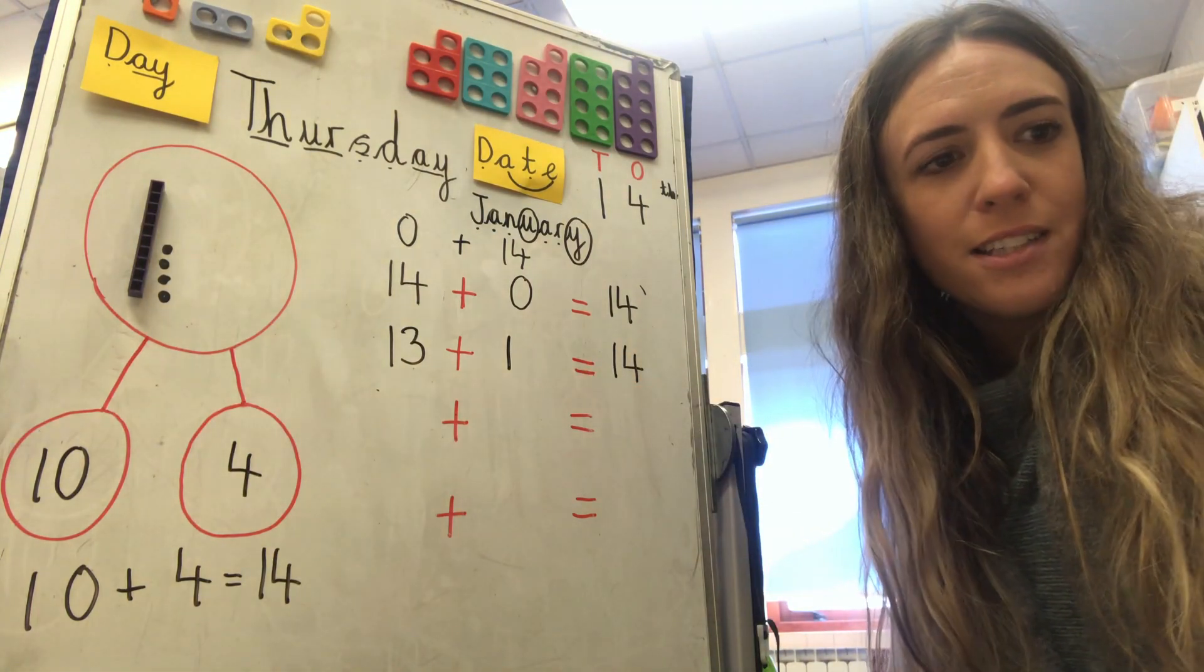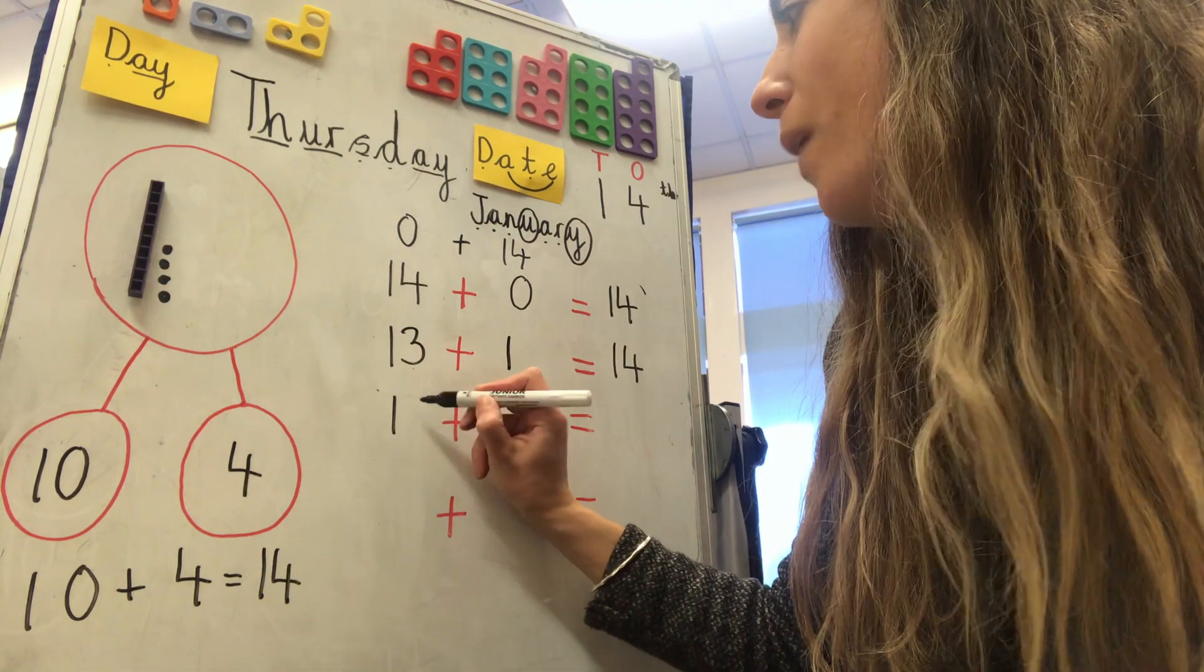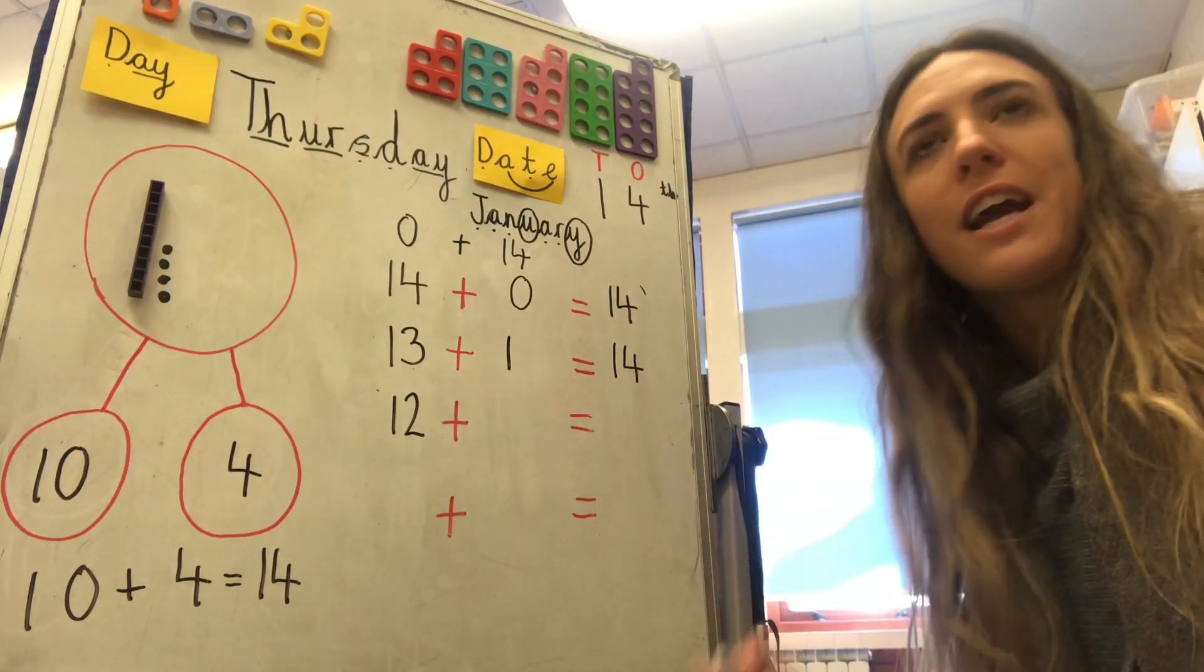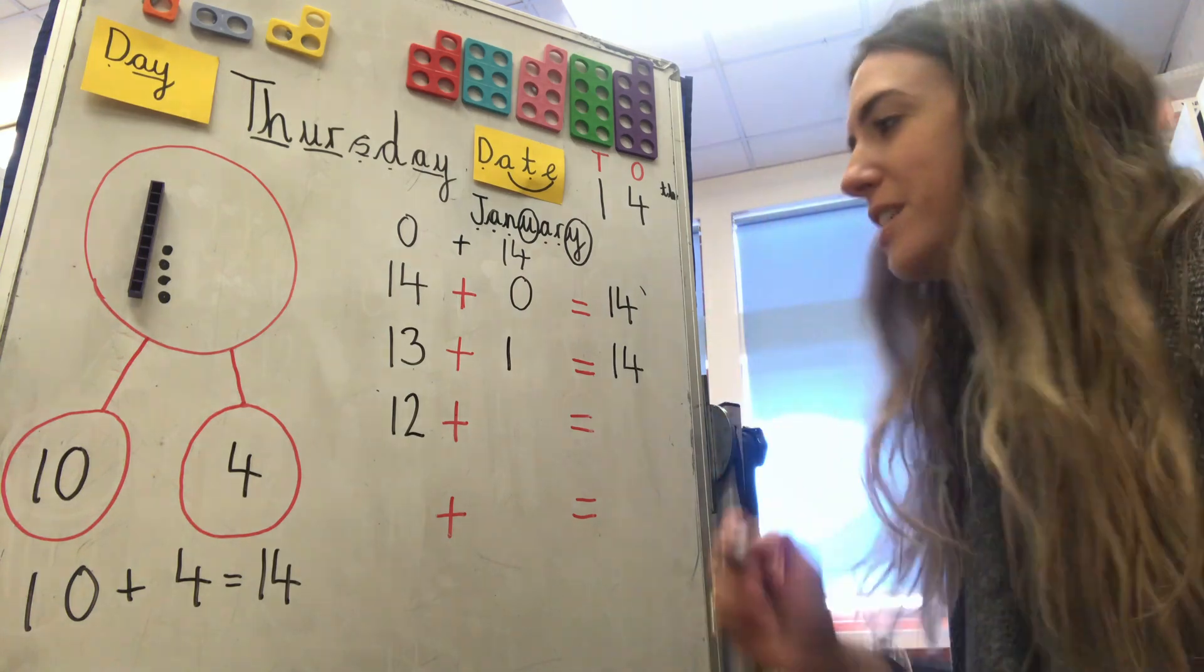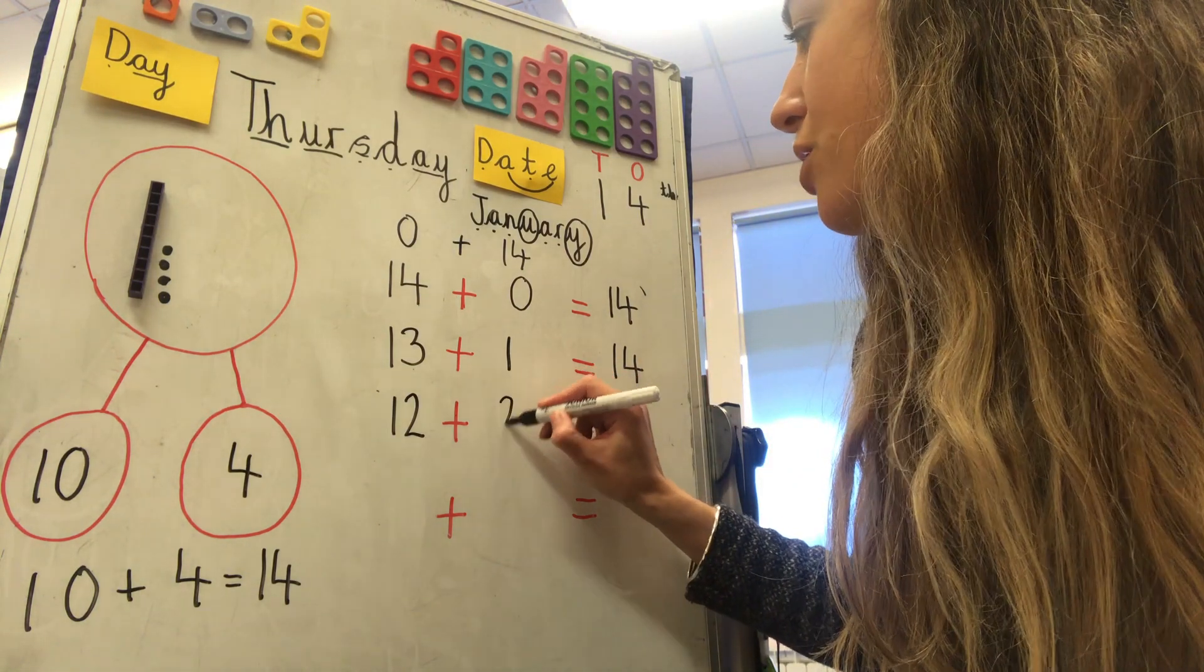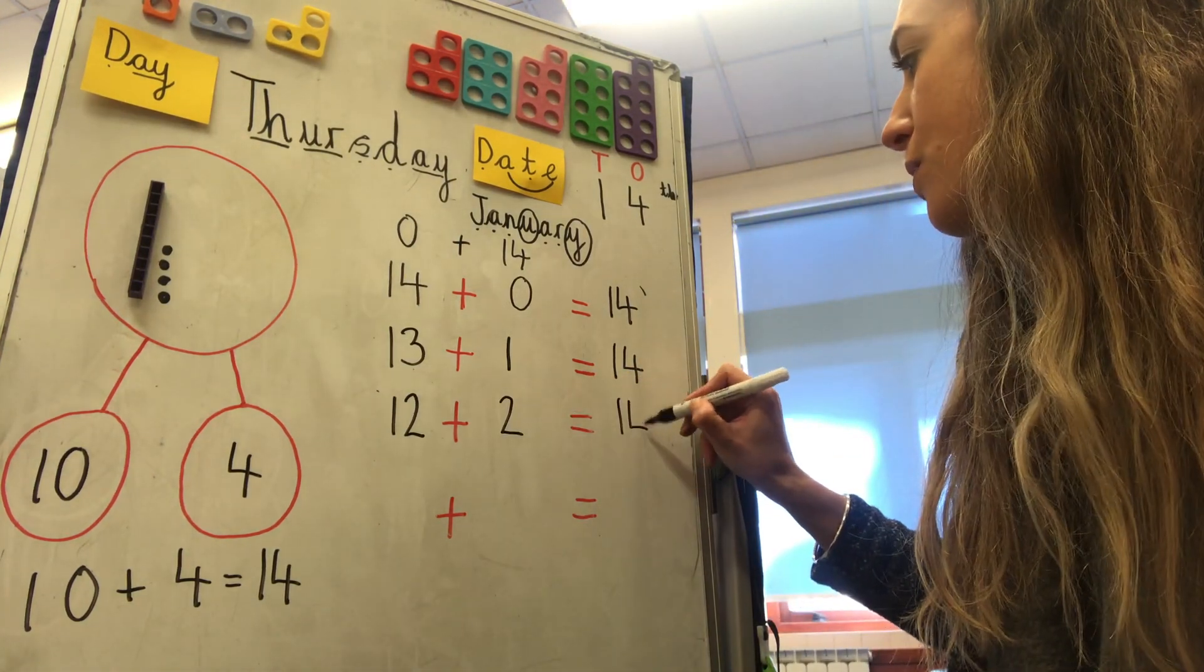Can we think of any other ways? Twelve. Yep, twelve. Carry on counting. Count on. Twelve, thirteen, fourteen. Good. Add two more is fourteen.